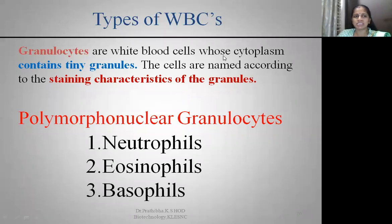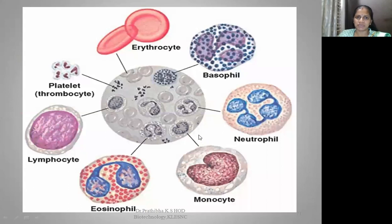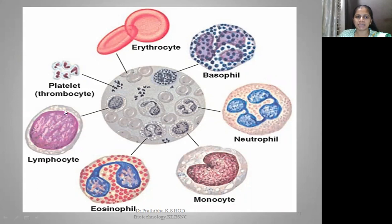Granulocytes are white blood cells whose cytoplasm contains tiny granules. The cells are named according to the staining characteristics of those granules. Granulocytes can also be known as polymorphonuclear granulocytes — neutrophils, eosinophils, and basophils. In the diagram, basophils show an S-shape with large visible granules; neutrophils show three to four lobes; monocytes show a clear bean or kidney shape; eosinophils show two lobes; and lymphocytes have a large nucleus with a rim of cytoplasm. Platelets, or thrombocytes, are responsible for clotting of the blood.